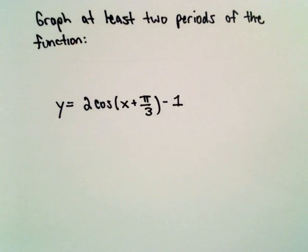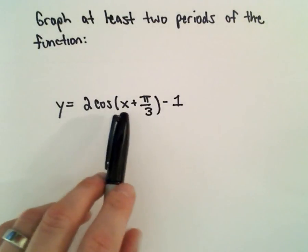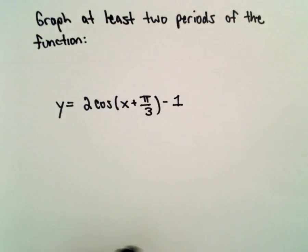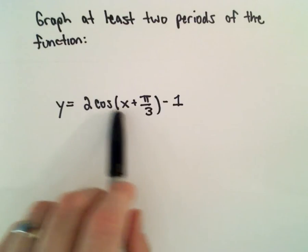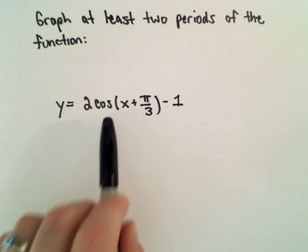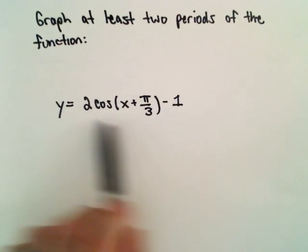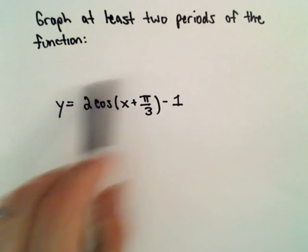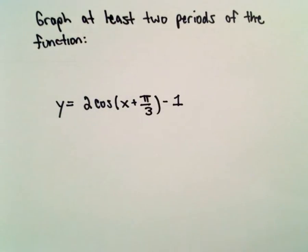Here I'm going to graph two periods of the function y equals 2 times cosine of x plus pi over 3 minus 1. The first thing I'm going to think about is: if I were to think about the graph of cosine x, how does the 2 out front, the plus pi over 3, and the minus 1 change that?